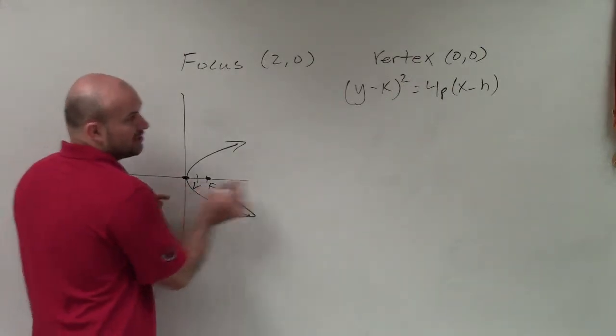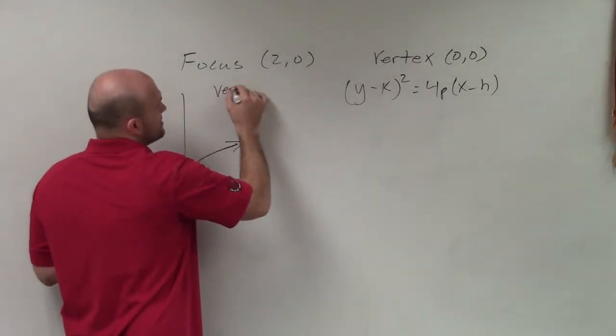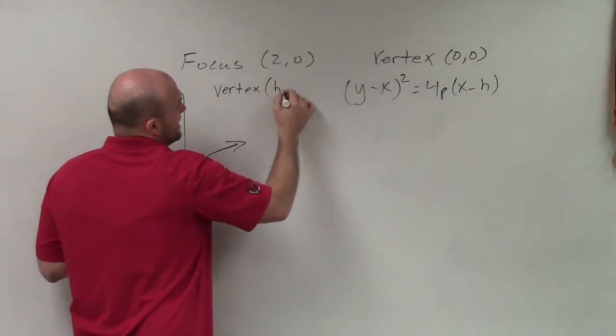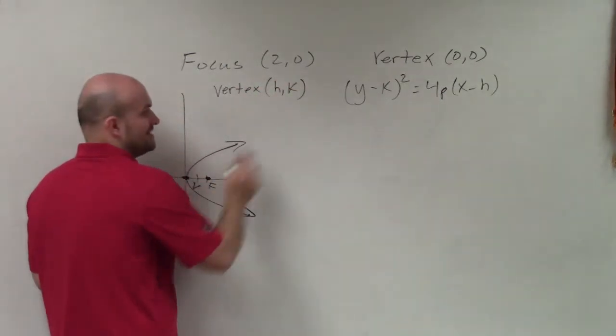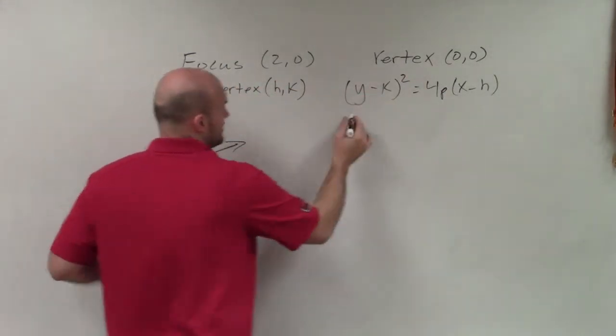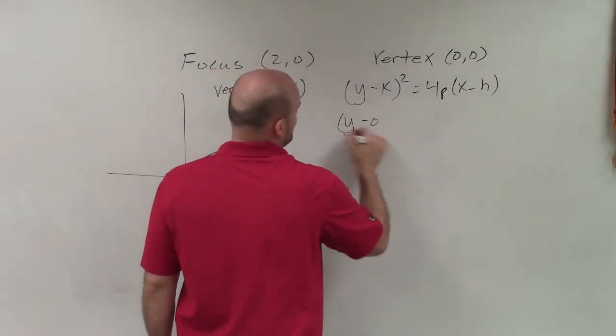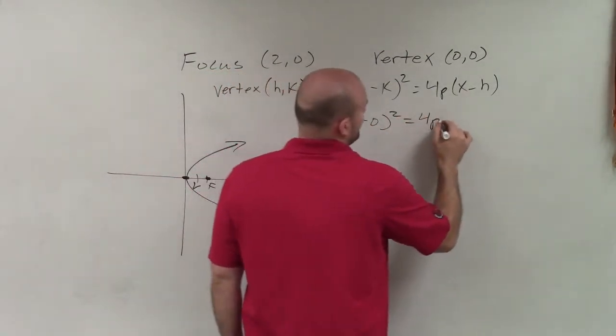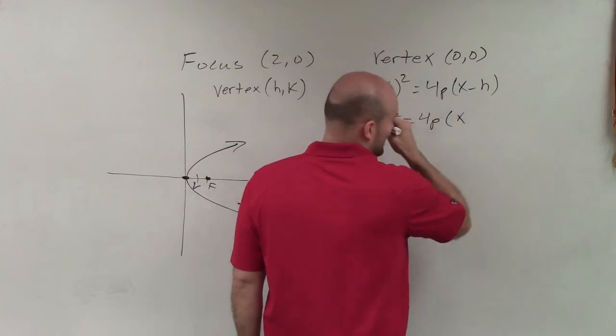Well, I know the vertex is at 0, 0. Remember, the vertex is h comma k. So I'm going to plug a 0 in for h and for k. So if I have y minus 0 squared equals 4p times x minus 0.